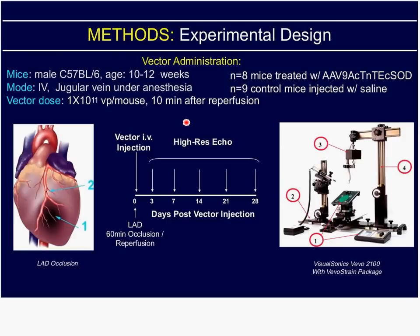We used 1×10¹¹ vector particles per mouse, and we administered them 10 minutes after reperfusion. Since this is an LV remodeling study, we used an extended coronary occlusion of 60 minutes to get a large and reproducible myocardial infarct. We typically look for infarcts that involve 30 to 50 percent of LV mass, so that we're well above that 24 percent cut point.